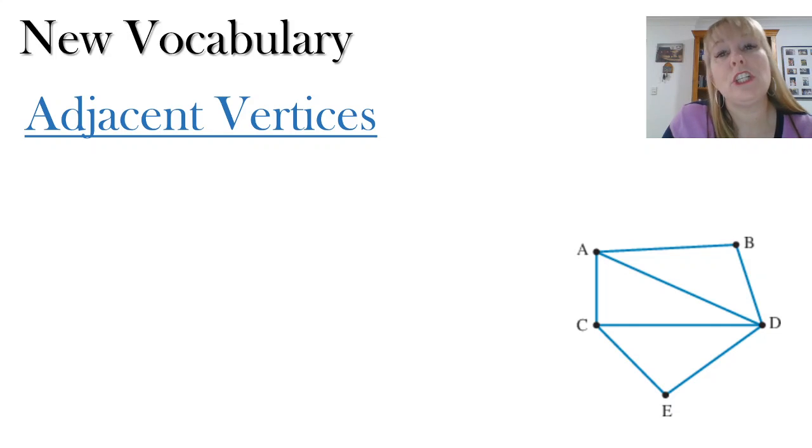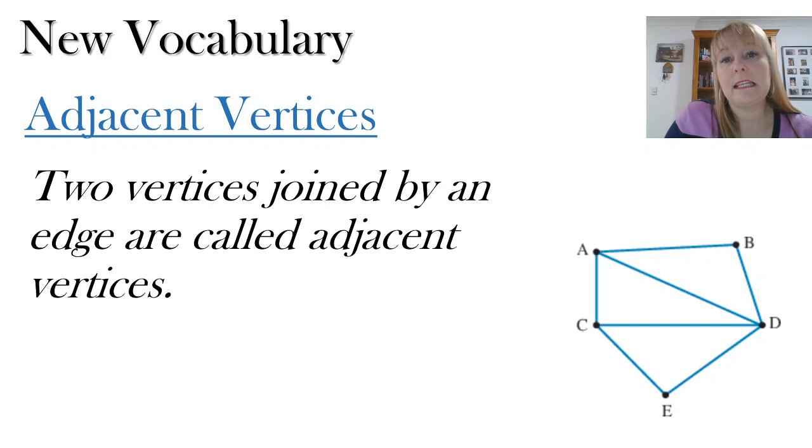We've also got something called adjacent vertices. These are two vertices. Remember, vertex is a point. And they are joined together by an edge. So for example, in this diagram, A and C are adjacent vertices. They're living next door to each other. They're joined by that edge. And also, A is also adjacent to D. It's also adjacent to B, because they are the three points that join to point A.